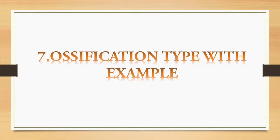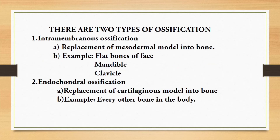Seventh question: ossification types with examples. There are two types of ossification: intramembranous ossification and endochondral ossification. Intramembranous ossification is a replacement of a mesodermal model into bone. Examples are flat bones of face, mandible, and clavicle. Endochondral ossification is a replacement of a cartilaginous model into bone. Examples include every other bone in the body except the flat bones of face, mandible, and clavicle.